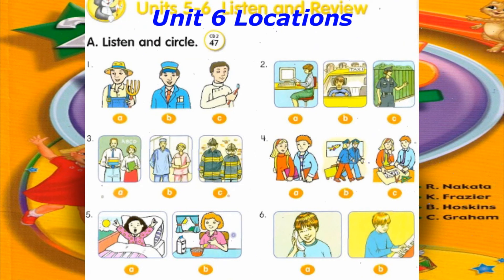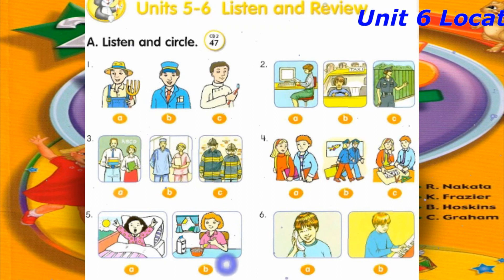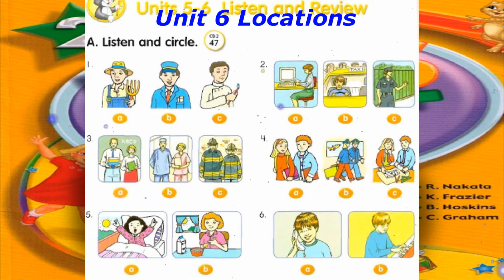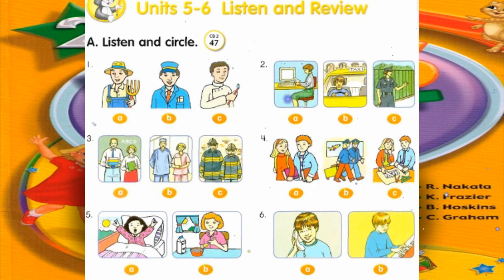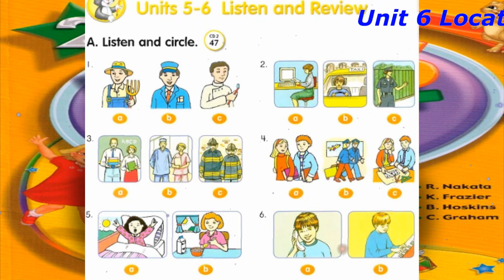Track 47. Units 5 and 6. Let's review. A. Listen and circle. Number 1: Who's he? He's Mr. Jones. He's a train conductor. Number 2: Is she a taxi driver? No, she isn't. She's a police officer.